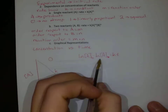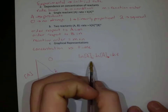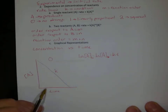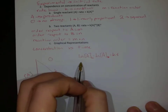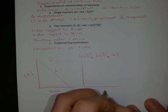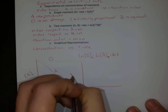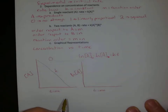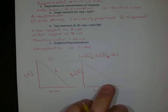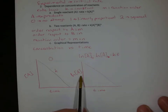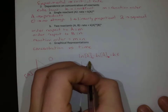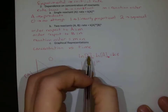This is our integrated rate law for first order reactions. Instead of plotting the concentration of A versus time — because that's not going to give me a linear graph — if I graph the natural log of the concentration versus time, now I should see a linear graph. So if I plot ln[A] versus time and that is linear, that indicates that my reaction is first order with respect to A.